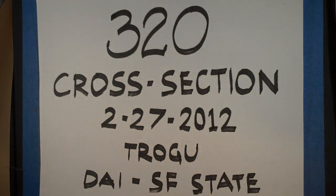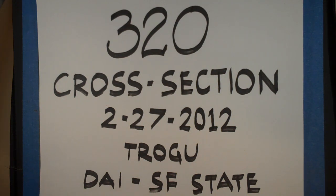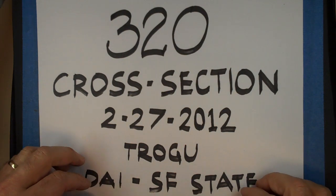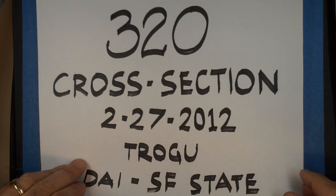This will be about the cross-section — a cross-section of your object. We'll just have one cross-section unless you want to do more, but one is the minimum required.